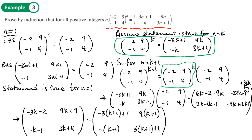So to highlight what happened: we assumed the statement was true for k, and when we used k plus 1, all those k's turned into k plus 1. With our assumption, the statement is true. Assuming true for n equals k, the statement is also true for n equals k plus 1.